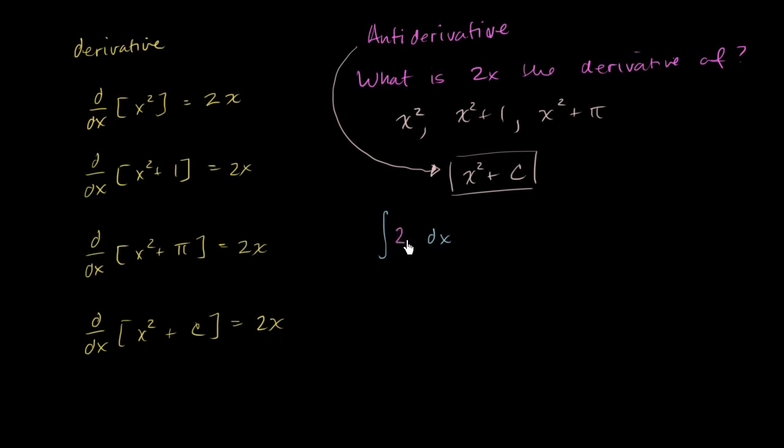So in this case, it would look something like this. This is just saying this is equal to the antiderivative of 2x. And the antiderivative of 2x, we have already seen, is x squared plus c.